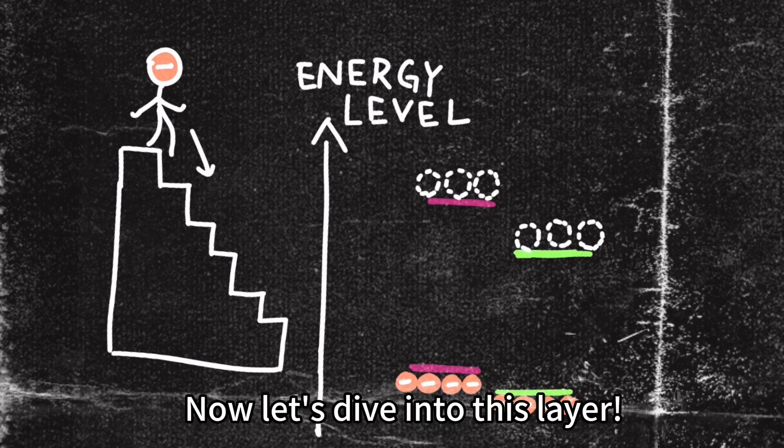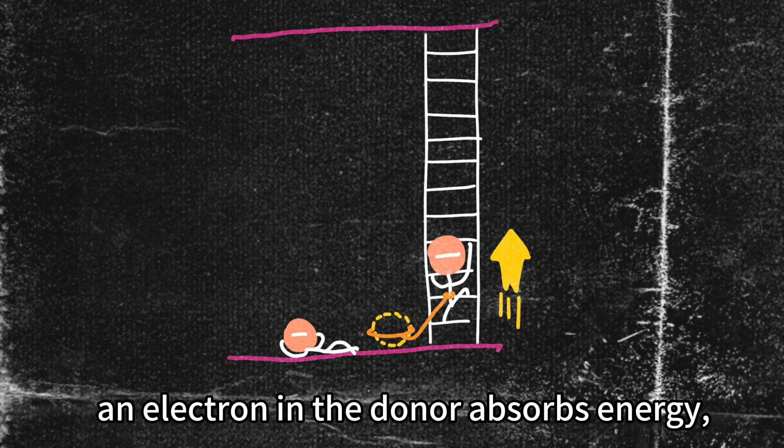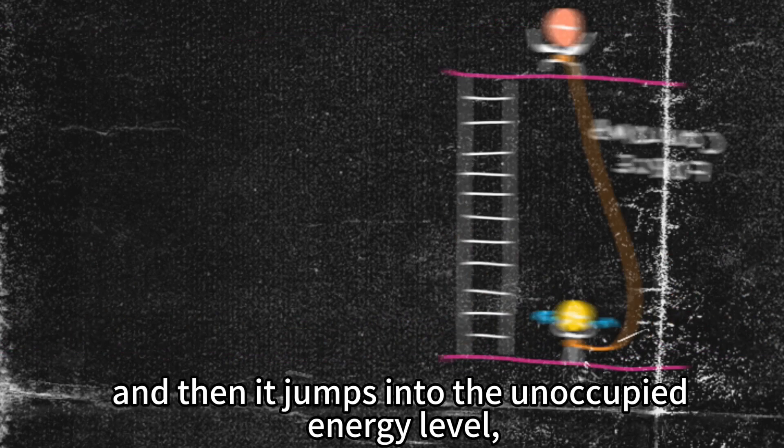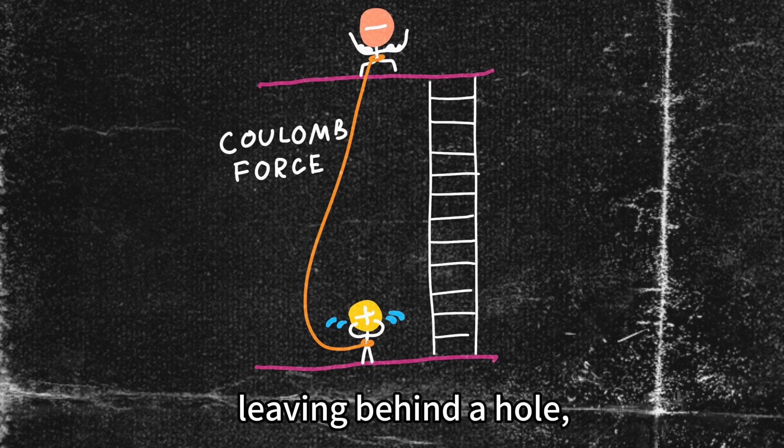Let's dive into this layer. When sunlight strikes, an electron in the donor absorbs energy, and then it jumps into the unoccupied energy level, leaving behind a hole.